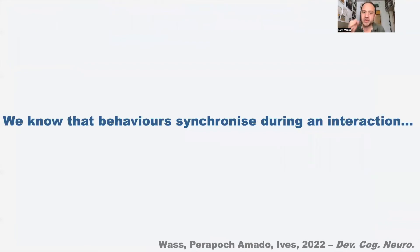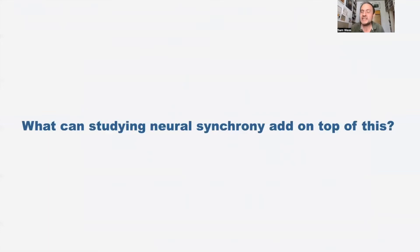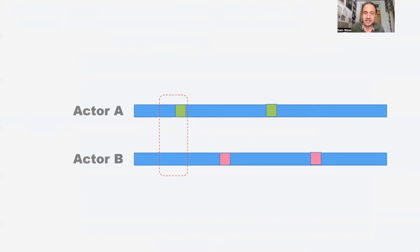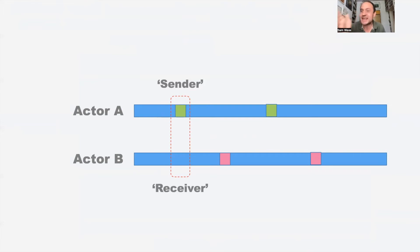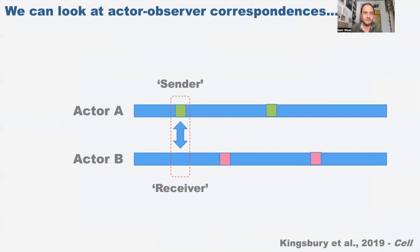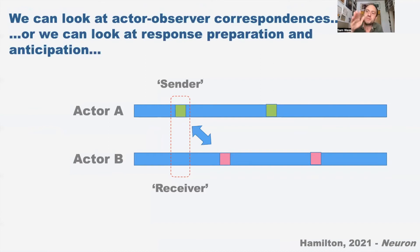Given that we know behavior is synchronized during an interaction — and we just reviewed the literature on that — what can studying neural synchrony add on top of this behavioral synchrony? So if we have actor A and actor B and time-lock to moments where actor A shifts their gaze to look directly at someone — the sender of a gaze cue — and then the receiver, we can look at actor-observer correspondences: when I do something and when someone does it to me, do I get similar patterns of brain activity? We can also look at response preparation and anticipation — those moments where the baton changes from one person to another during social interaction.